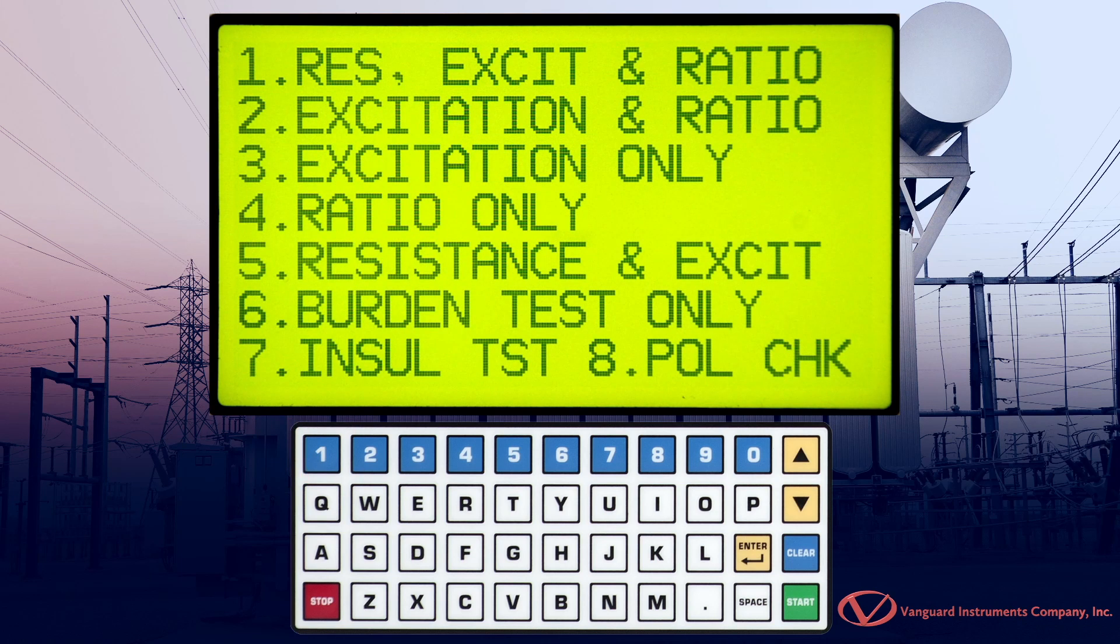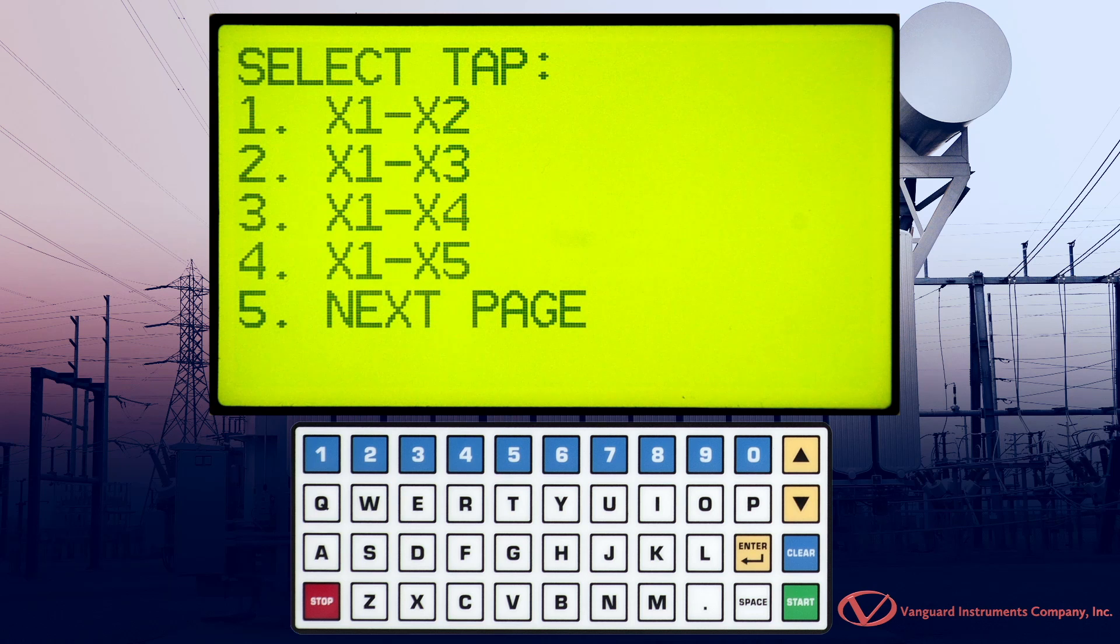Press the 1 key to select run test. Press the 4 key to select ratio only. Now select the tap connection by pressing the corresponding key.